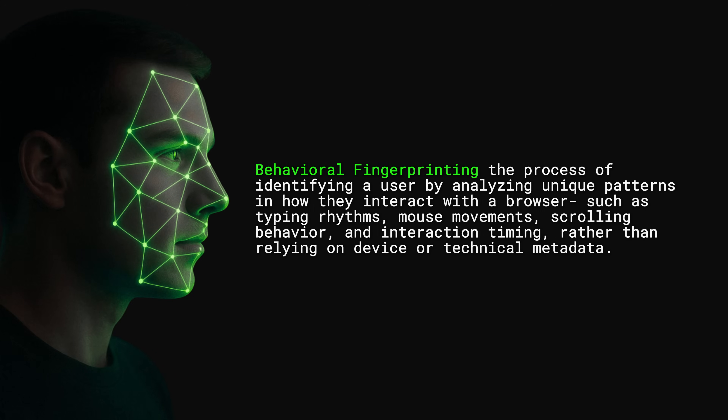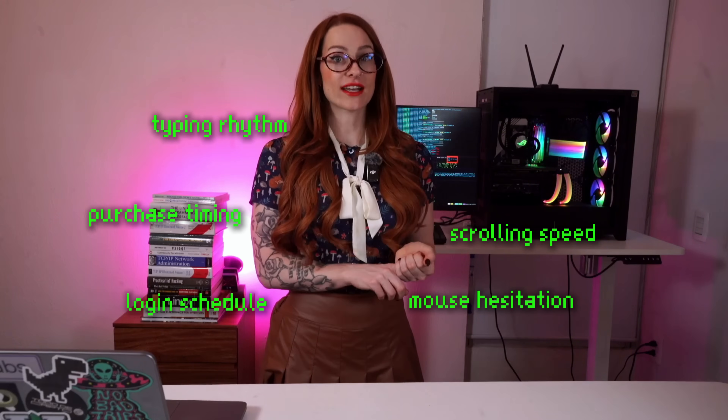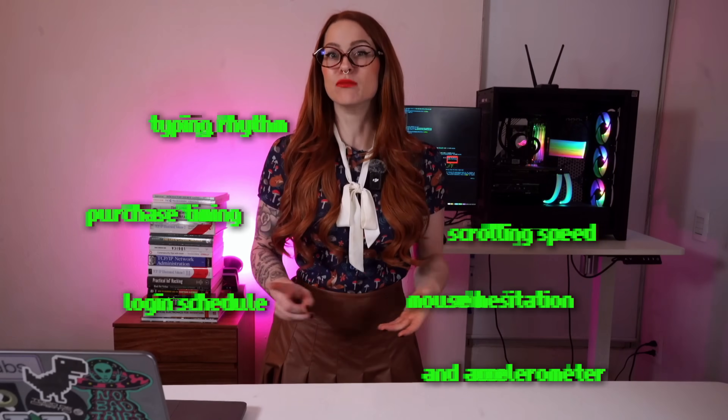Behavioral fingerprinting is the final boss of modern tracking. It identifies you based on how you move through the digital world — the tiny patterns you don't even notice you make. That could be your typing rhythm, scrolling speed, mouse hesitation, purchase timing, login schedule, and accelerometer-based movement signature. You don't consciously control these patterns, but your devices and apps definitely see them, your browser tracks them, and models trained on billions of data points definitely see them.